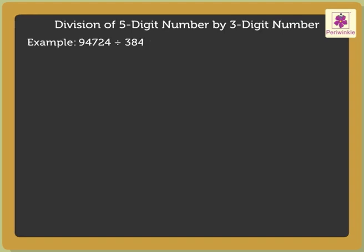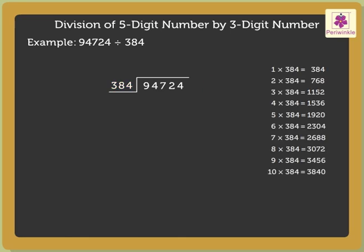Next is the division of a 5-digit number by a 3-digit number. Let us divide 94,724 by 384. Let us compare the hundreds, as the greatest place in the divisor is hundreds. 947 is greater than 384, and therefore we can divide 947 by 384. Here, we find the nearest multiple of 384 as 768. As 384 into 2 is equal to 768, we write 2 in the quotient above 7. Now, subtract 768 from 947, which is equal to 179.